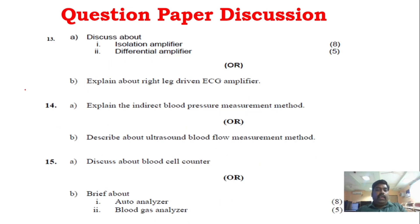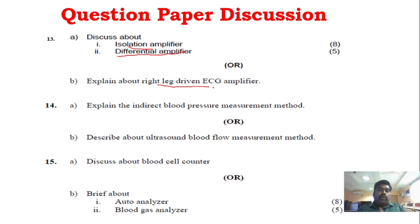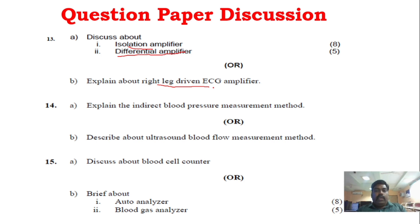In Unit 3, there are major questions: isolation amplifier, differential amplifier, and right-leg-driven ECG amplifier. Concentrate on the amplifiers. In Unit 4, blood pressure, blood flow, and cardiac output are the key topics — blood pressure measurement as well as blood flow measurement.